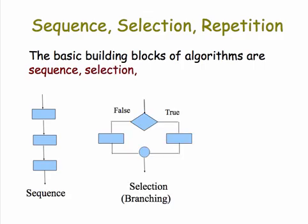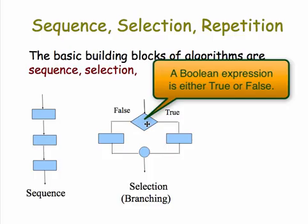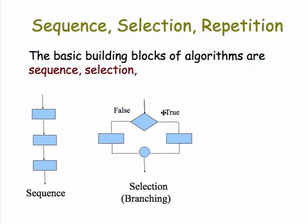The second building block is called selection. This is based on a Boolean condition, meaning an expression which can be either true or false. If it's true, it causes the algorithm to go down this branch and do this statement. If it's false, it causes the algorithm to go to the left branch and do these statements. And then when it's finished, it continues on to the next statement in the algorithm.